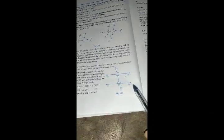In figure 6.1, transversal PS intersects line AB and CD at point Q and R respectively. Angles PQR and QRS, and angles AQS and QRT are given.